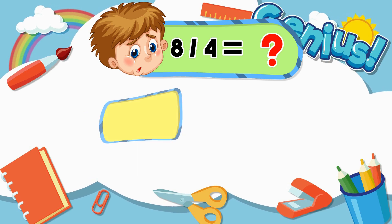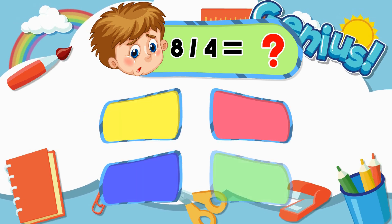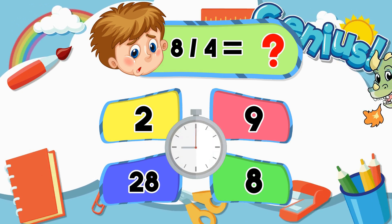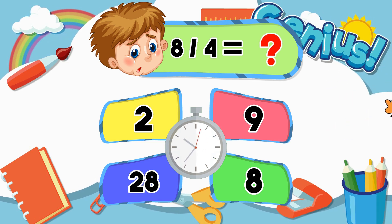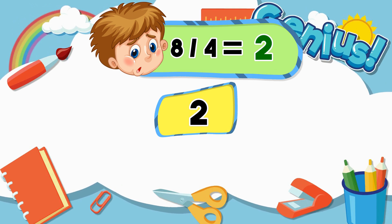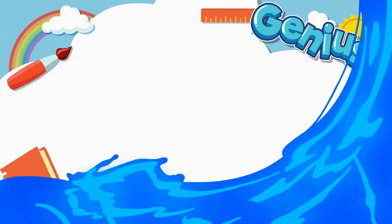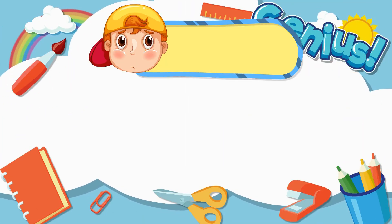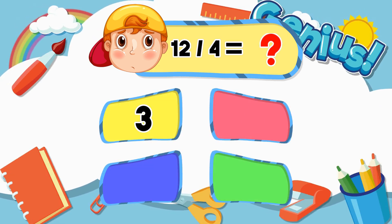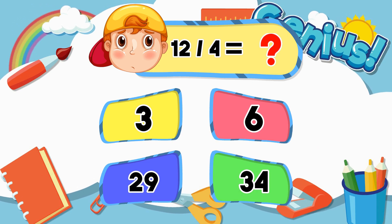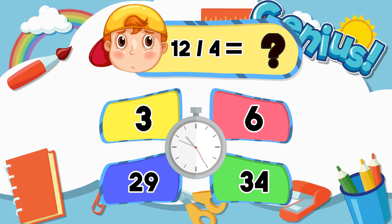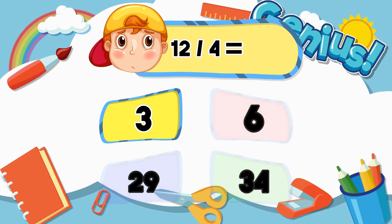What is eight divided by four? Two, nine, twenty-eight. Two. What is twelve divided by four? Three, six, twenty-nine, thirty-four. Three.